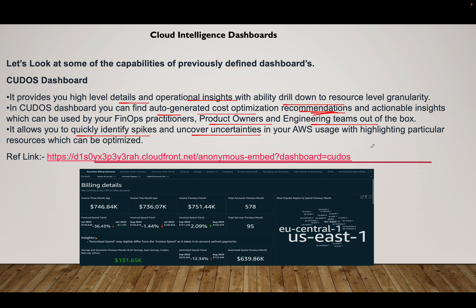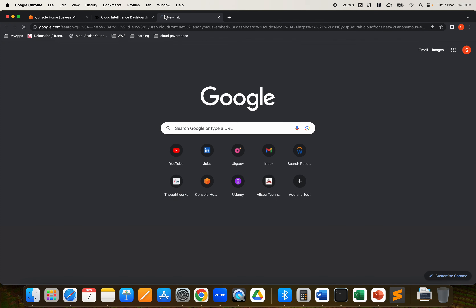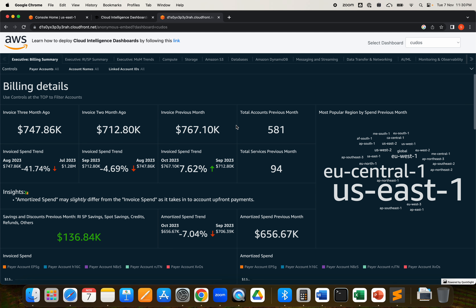I'll show you how to deploy the CUDOS and CI dashboards. The rest — like KPI and others — you can deploy as per your usage. After deploying the dashboard I'm going to delete it; I don't want to pay certain dollars while doing a demo. Let me stop the presentation. This is a public dashboard available on the public platform given by AWS, maintained by folks from the customer end.